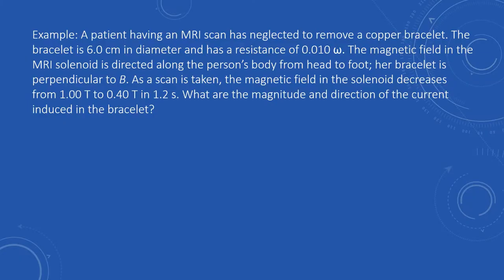Here's a really interesting example relevant to real life. A patient having an MRI scan has neglected to remove a copper bracelet. The bracelet is 6 centimeters in diameter and has a resistance of 0.01 ohms. The magnetic field in the MRI solenoid is directed along the person's body from head to foot, making the bracelet perpendicular to the magnetic field. As the scan is taken, the magnetic field decreases from 1 to 0.4 teslas in 1.2 seconds.